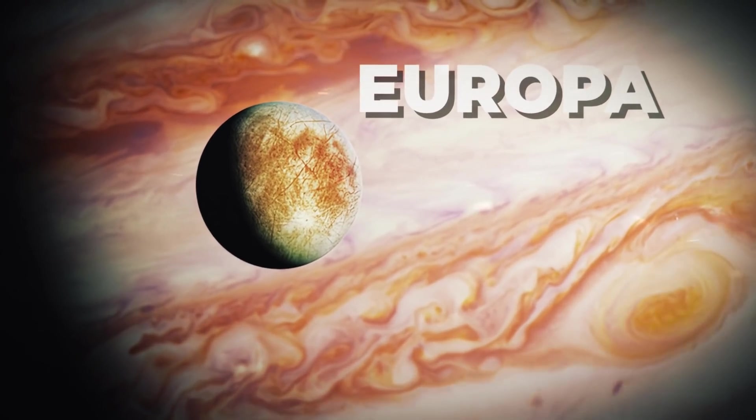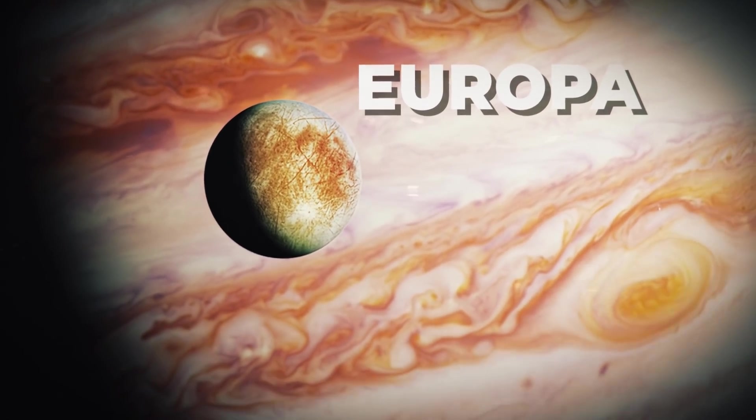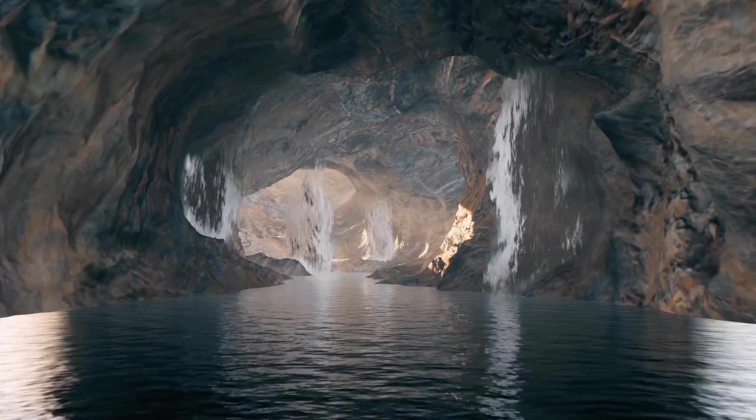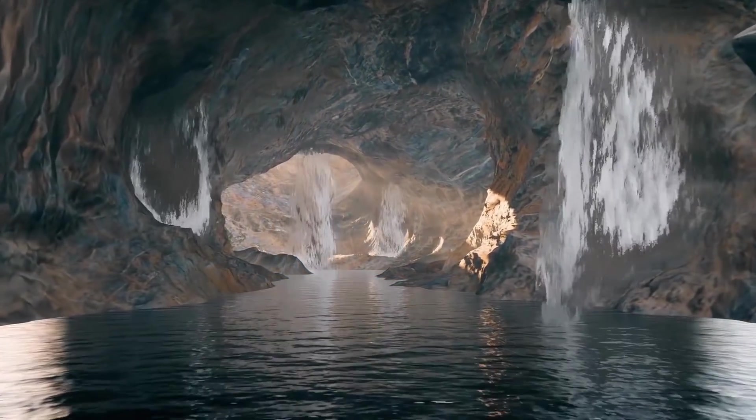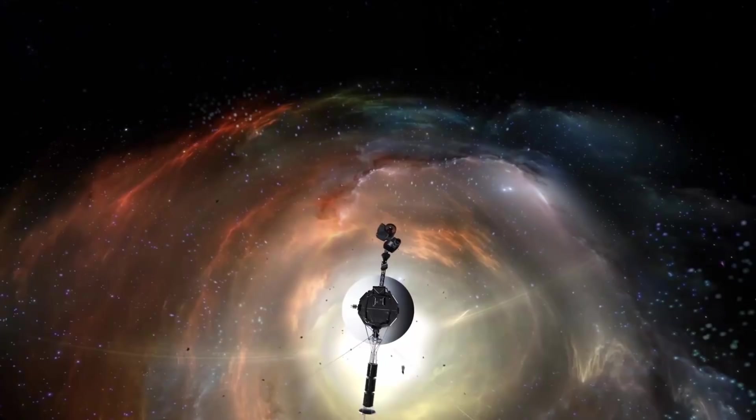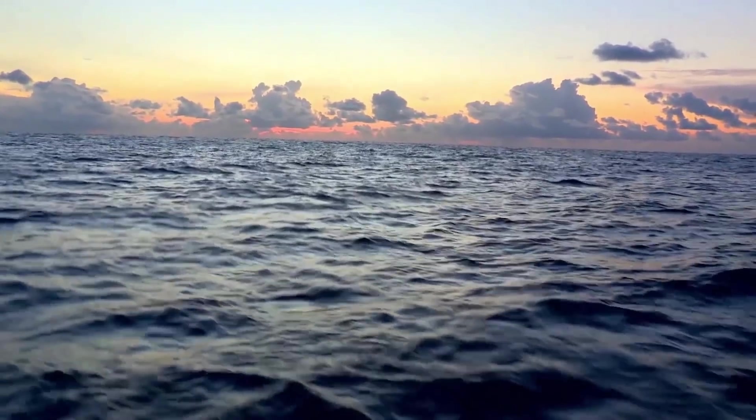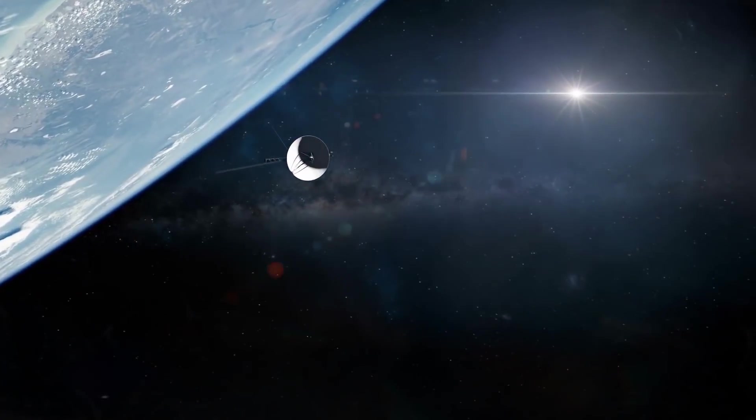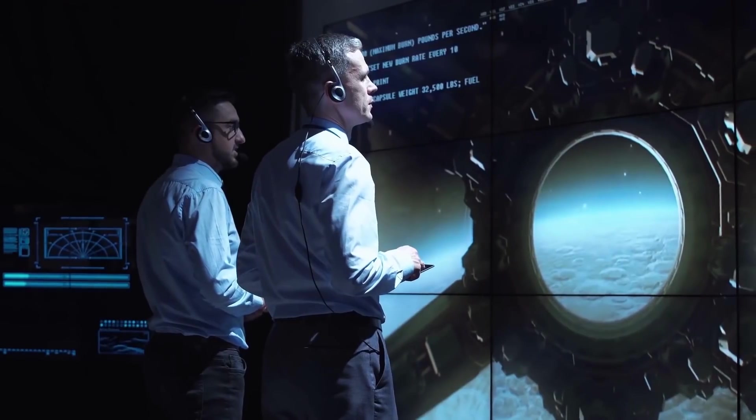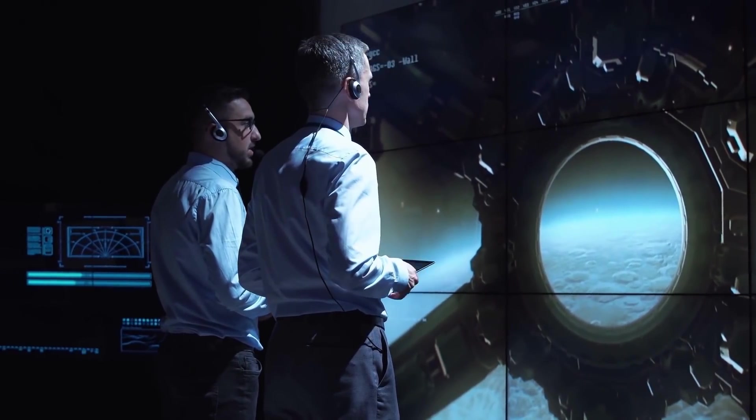Jupiter's moon Europa also had surprising discoveries that revealed a cracked surface, which for the first time suggested that there was liquid water below the surface. Before Voyager explored Europa, the only known liquid ocean belonged to Earth. These were just two of many discoveries that Voyager would send back home to Earth over the first years.